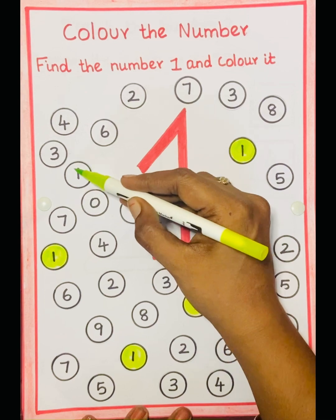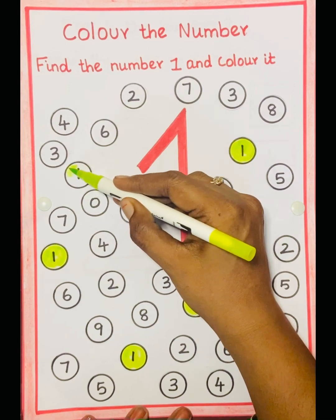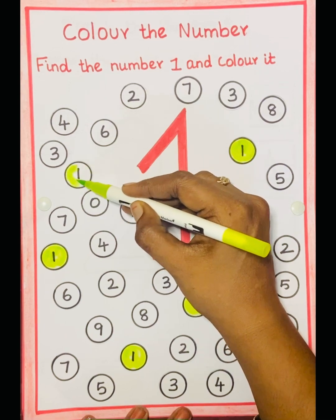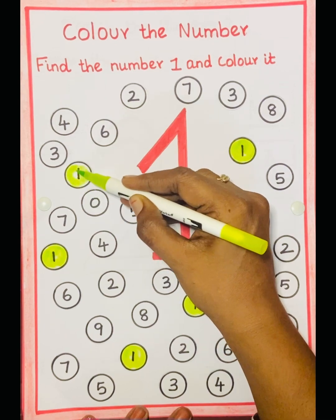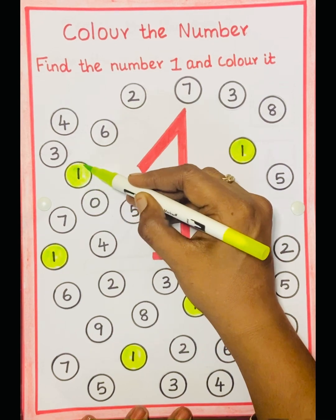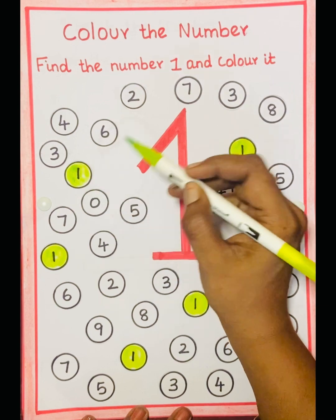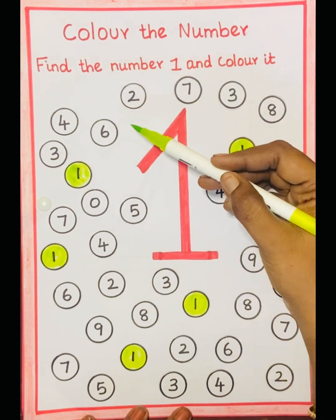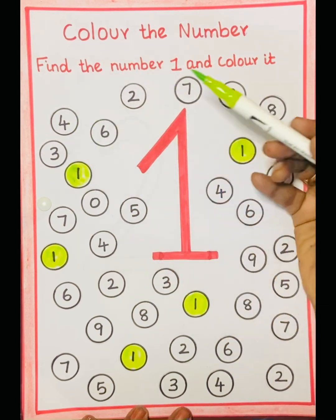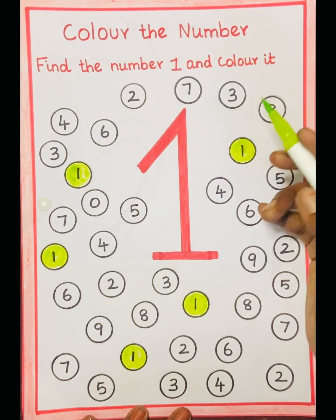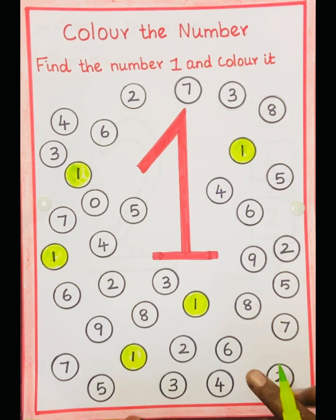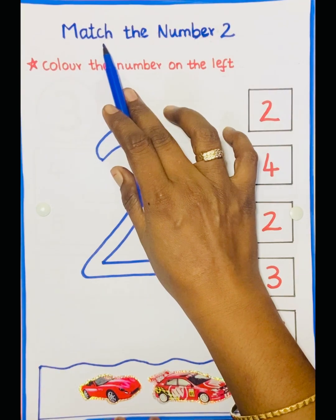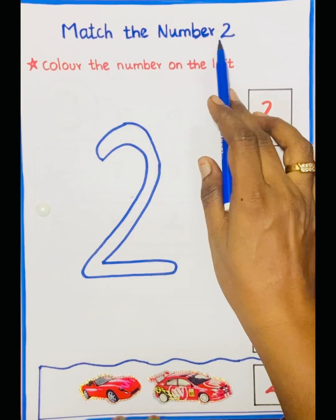Then 1. Then 3, 4, 6, 2. So we have colored all the number 1. Match the number 2.